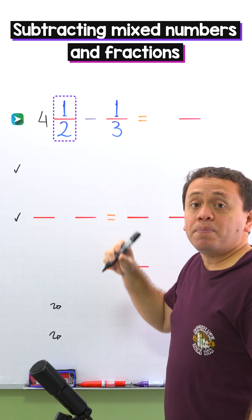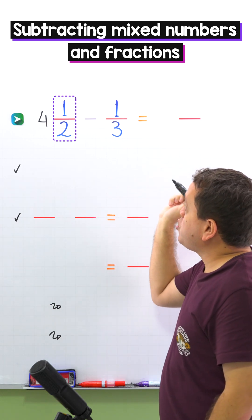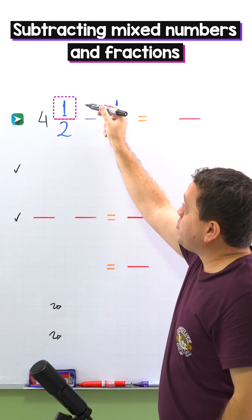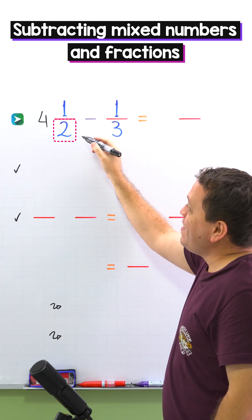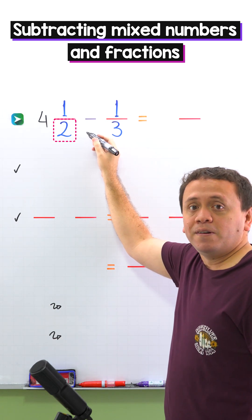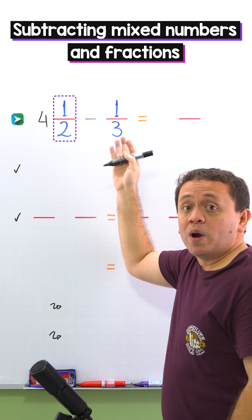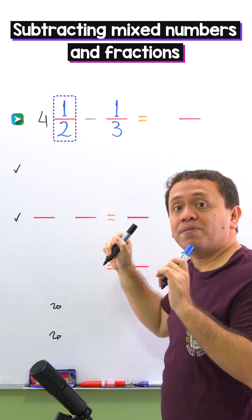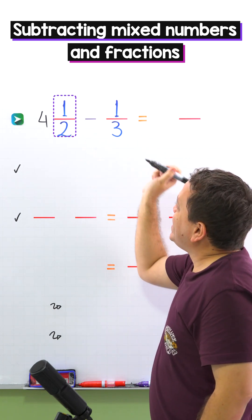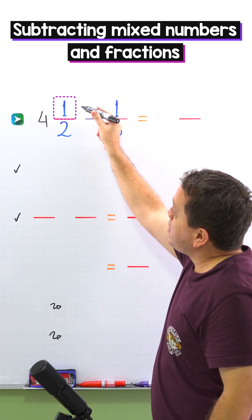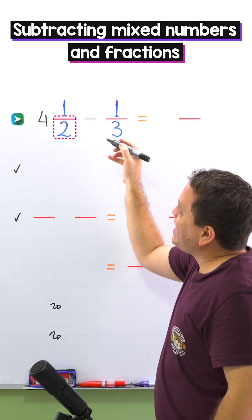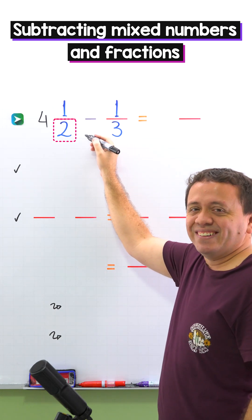A proper fraction is a fraction where the numerator, the top number, is less than the denominator, the bottom number. One half is a proper fraction given that the numerator one is less than the denominator two.